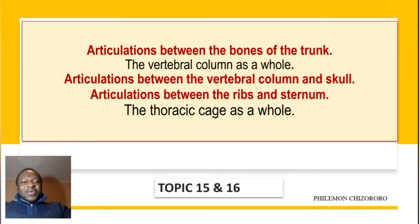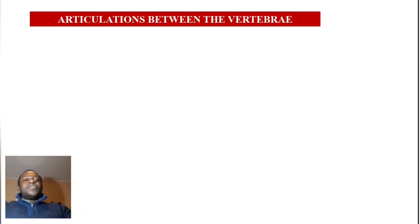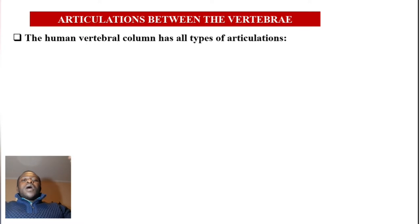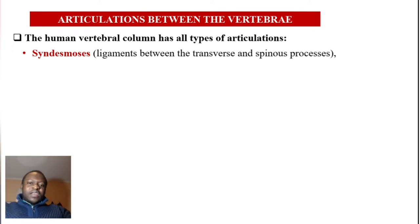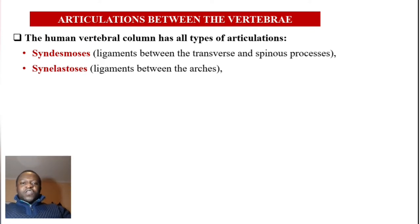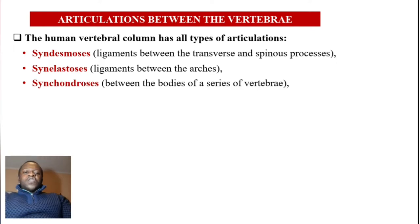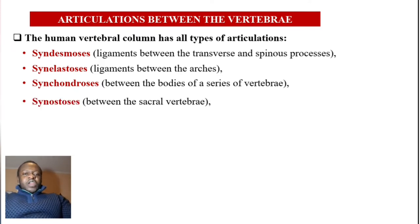Starting with the articulations between the vertebrae. The human vertebral column has all types of articulations including syndesmosis — that's the ligaments between the transverse and spinous processes; synelostosis — that's ligaments between the vertebral arches; syncontrosis — that's between the bodies of a series of vertebrae. Syncontrosis is cartilage.